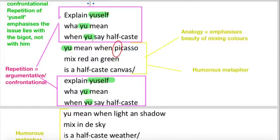Explain yourself, what you mean when you say Half-Caste. We're going to see these three lines repeated throughout the poem. We've got the direct address, and he's challenging them. Explain yourself, what do you mean? So the poem is really quite argumentative, which reflects how strongly he feels about this topic.